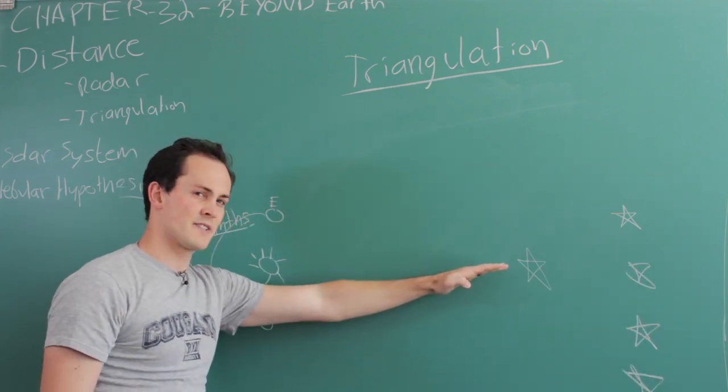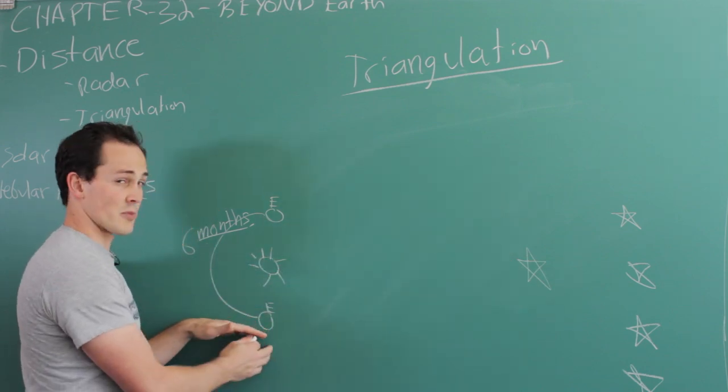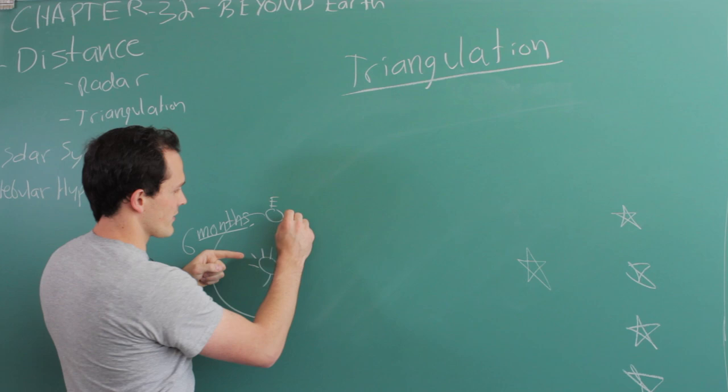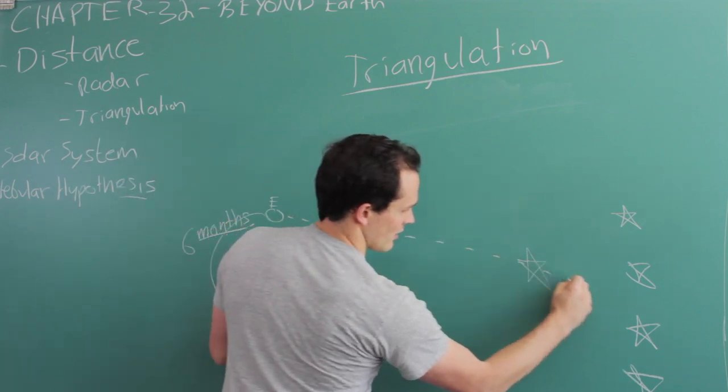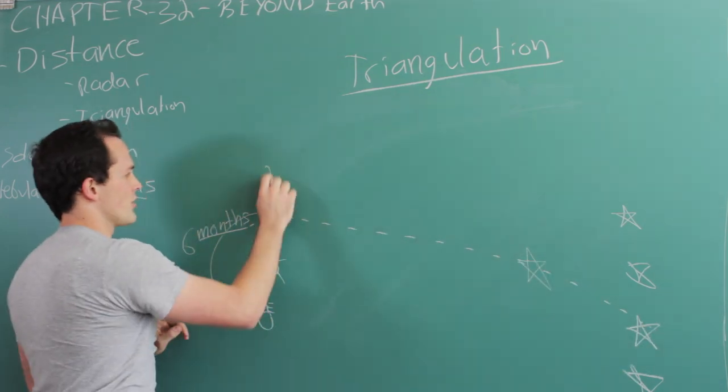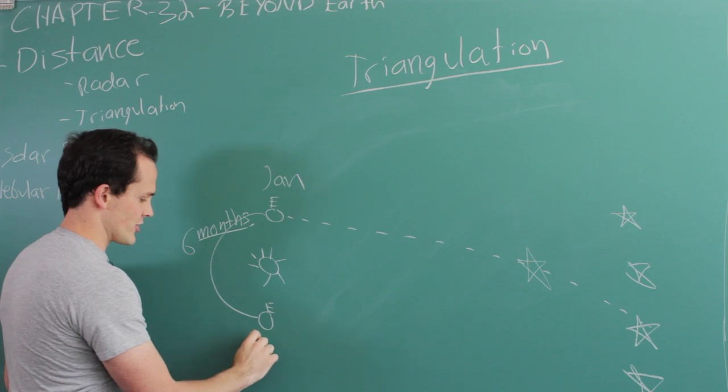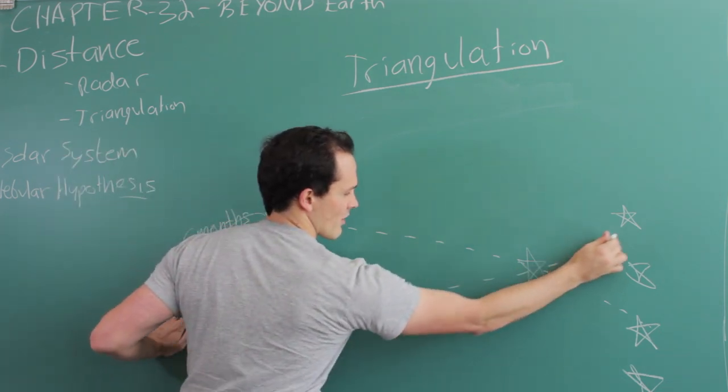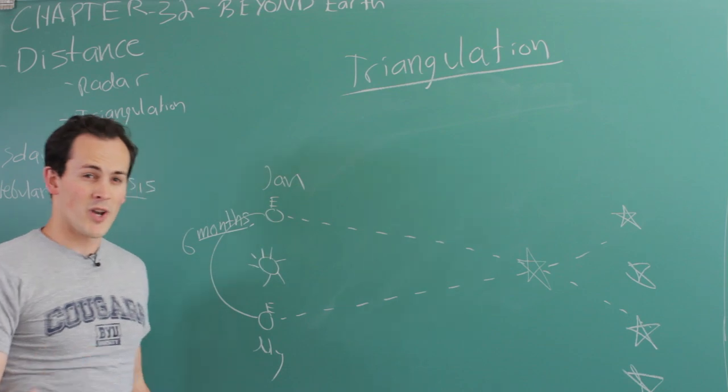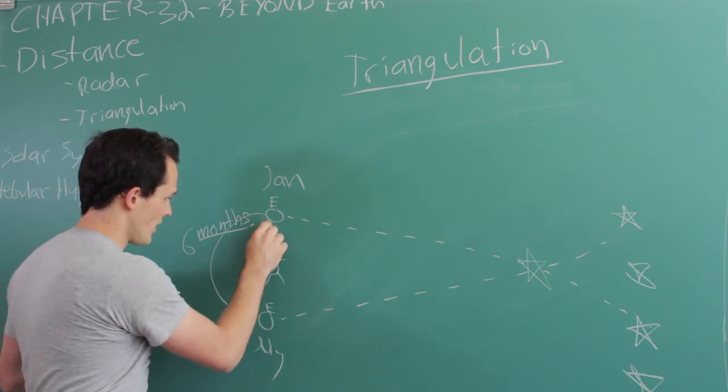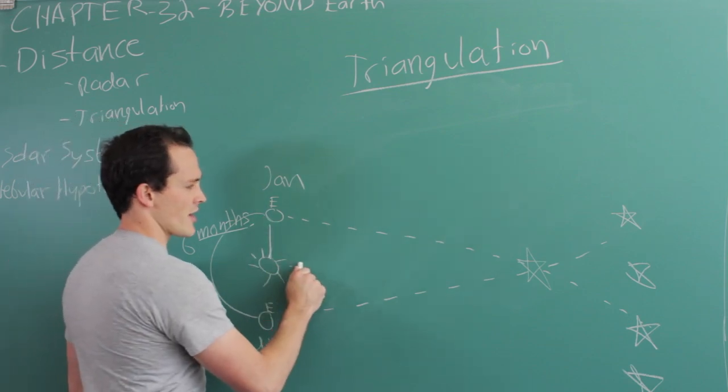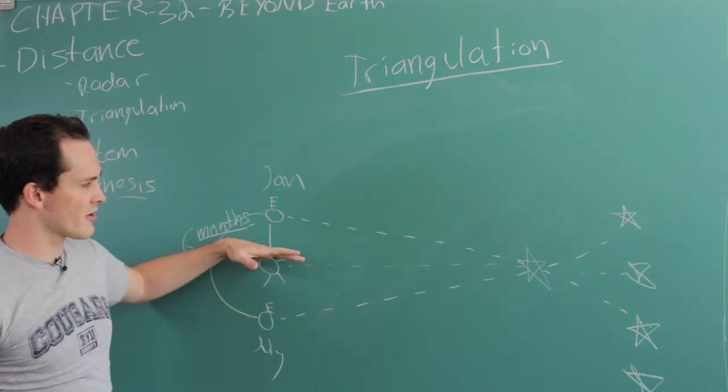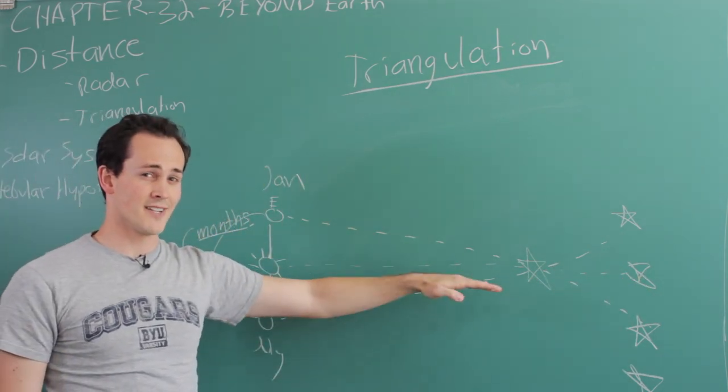The position is going to be off slightly depending on our viewpoint from Earth. We take a picture right here of how this star looks in January. Six months later in June or July, we take another picture of where the star appears to be. We know our distance from us to the sun, and we've got a right triangle. We're able to figure out these angles and figure out exactly how far away the star is.